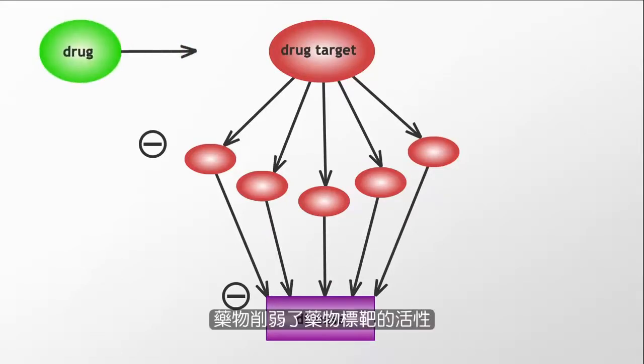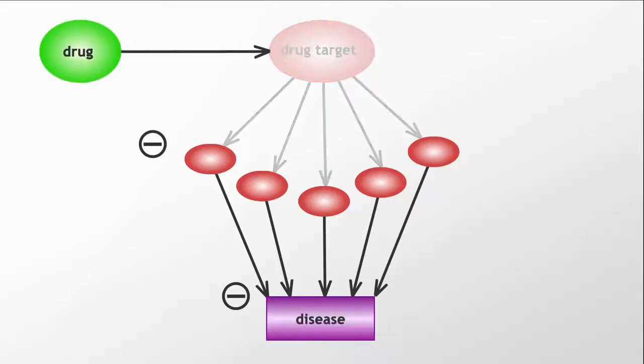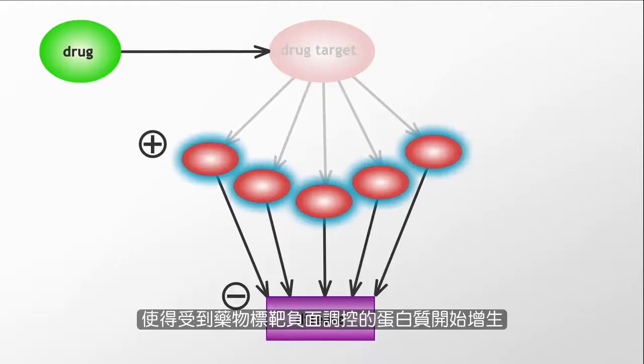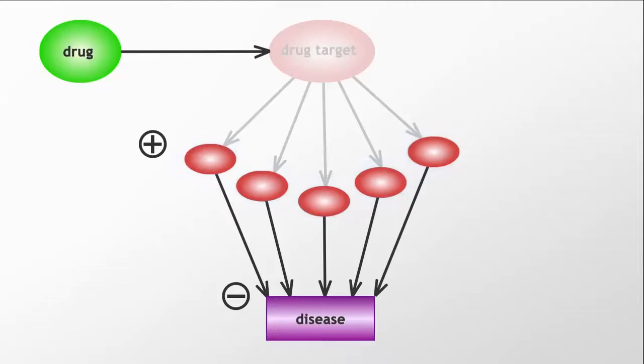The drug decreases the activity of the drug target. This results in increased production of the proteins negatively regulated by the drug target.